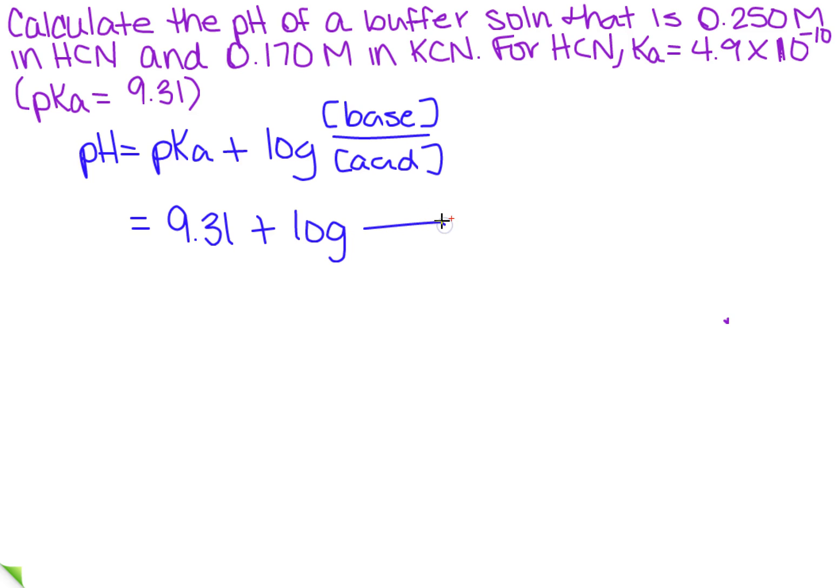For most students, the acid is the easy one to pick out because it has an H in front of it most of the time. So in this case it is. So this is the 0.250 goes on the bottom and the 0.170 goes on top.